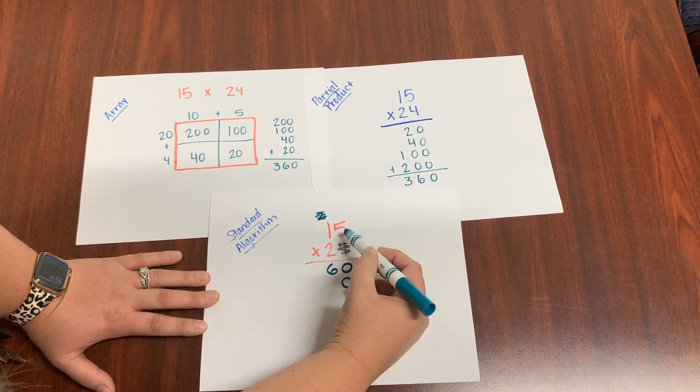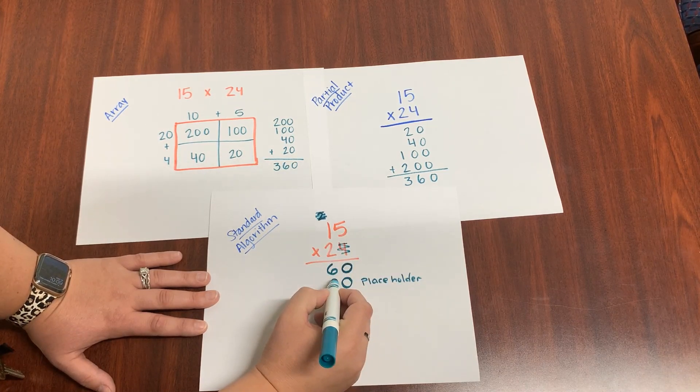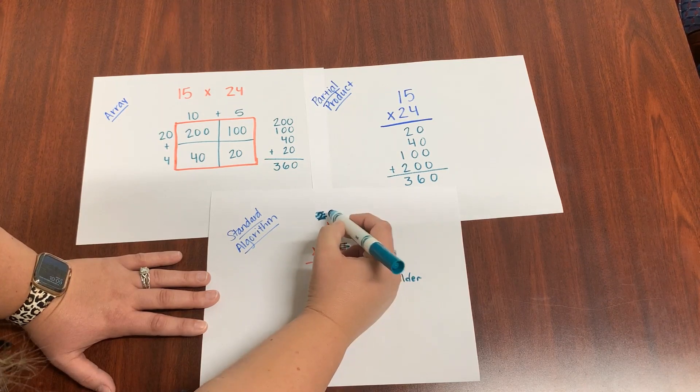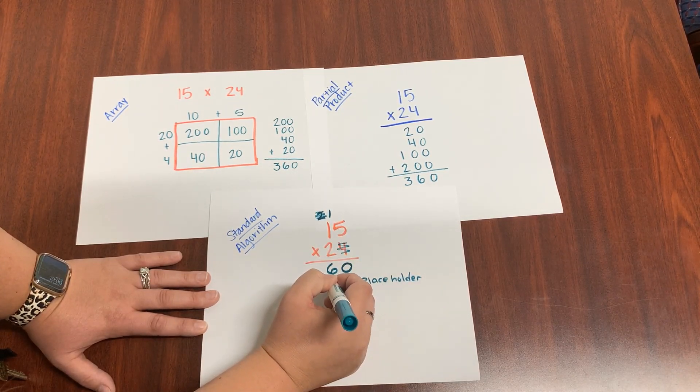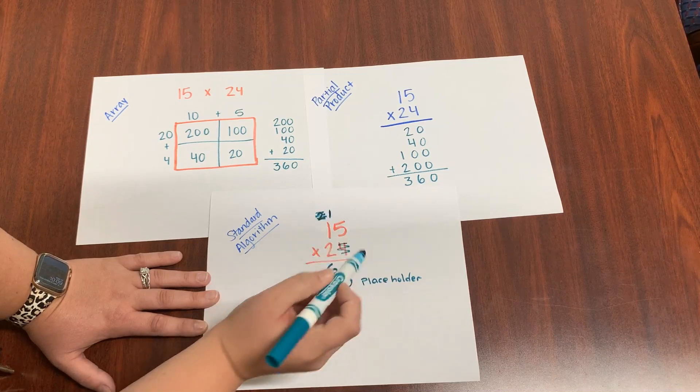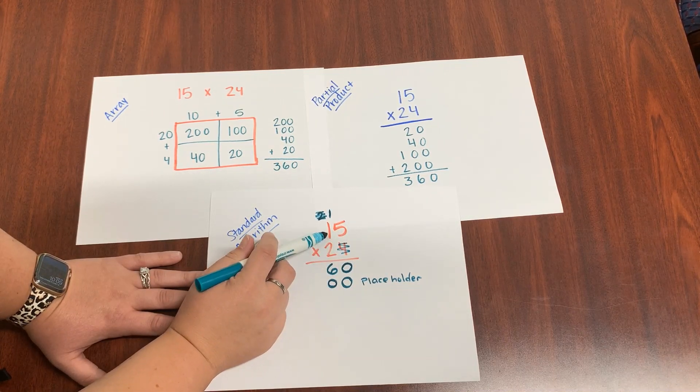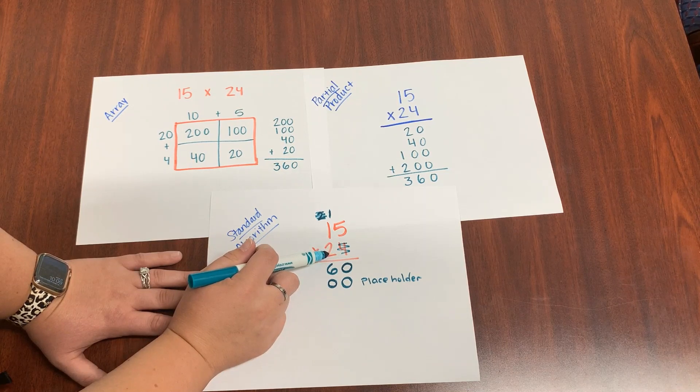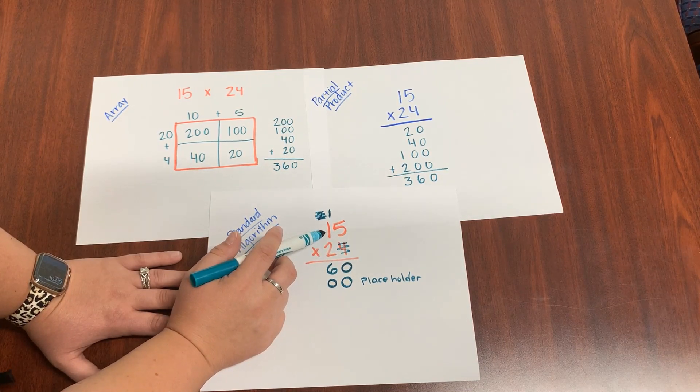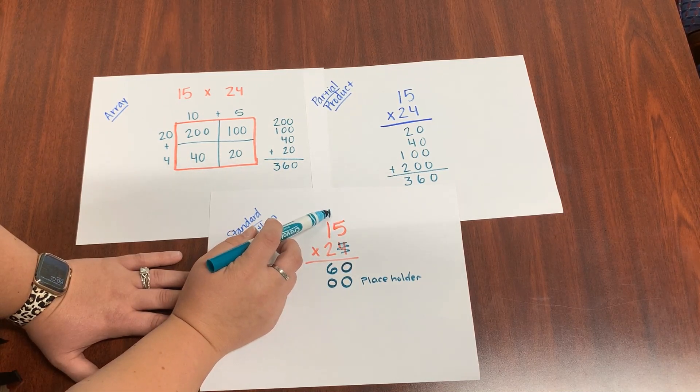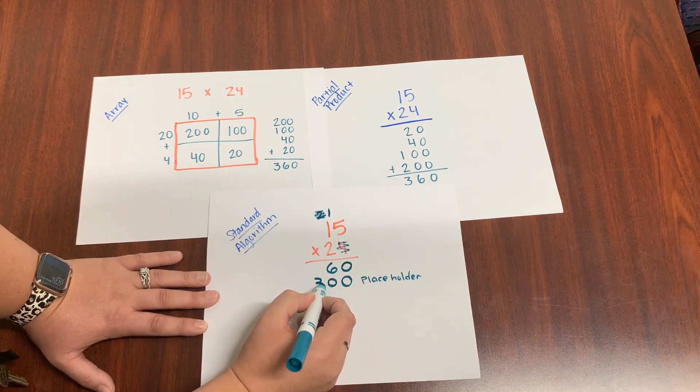So I'm going to take that two tens and multiply it by the five. We're going to go over to the ones first. Two times five is ten. So I'm going to put my zero, carry my one. Two times five was ten. Put my zero, carry my one. And then we're going to do the two in the tens times the one in the tens.